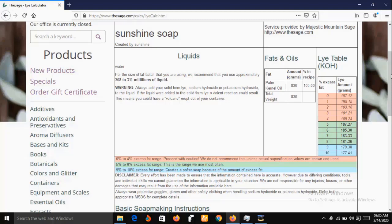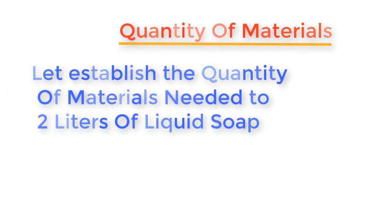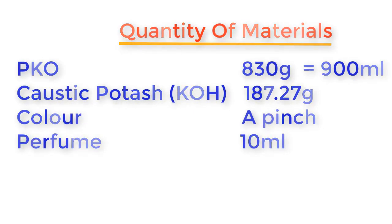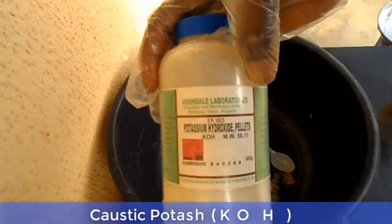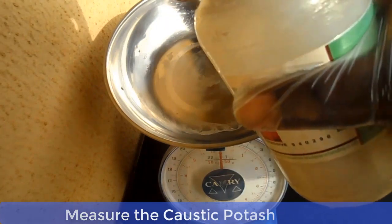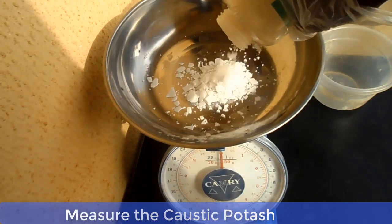Before we go into the main production process, let's go through some safety precautions: avoid direct contact of chemicals with the skin or eyes, keep all chemicals out of reach of children, and do not taste any chemical. Now, the quantity of materials required to produce two liters of liquid soap: palm kernel oil (PKO) — 830 grams, which is 900 ml; potassium hydroxide — 187.27 grams; color — a pinch; perfume — 10 ml. Let me show you these materials one by one before we go into mixing.